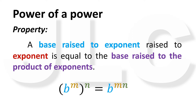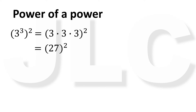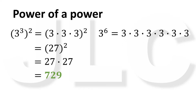Let's verify by example. Let's evaluate the square of 3 cubed. This equals the square of 27, which is 27 times 27, equals 729. Now let's evaluate 3 raised to 3 times 2, or 3 raised to 6. This equals 3 times 3 times 3 times 3 times 3 times 3, which equals 729.